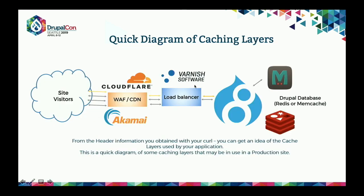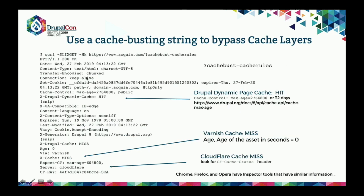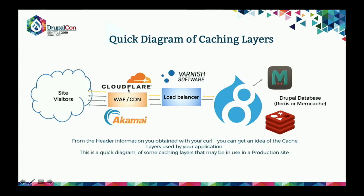Here's an example of a Drupal 8 site on a typical stack. Drupal 8 can cache to the database, Memcache, or Redis depending on where you're hosted. We use Varnish at Acquia on load balancers, and we strongly advise you to cache as much in Varnish as possible because it pushes content out quickly. That can then be picked up by a CDN like Cloudflare, and we also encourage you to use a web application firewall — it's nice to have that ready in advance in case you need it.